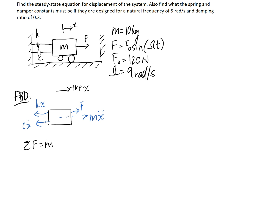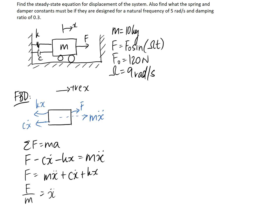We can sum our forces to be equal to the mass times the acceleration, and we end up with F minus Cx-dot minus Kx is equal to Mx-double-dot. Now we want to swing everything to one side of the equation that has an x in it, and leave everything without on the other. Finally, we're going to put a one in front of the x-double-dot term, so dividing everything by M will achieve that.